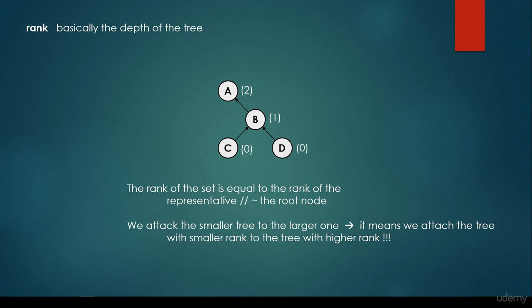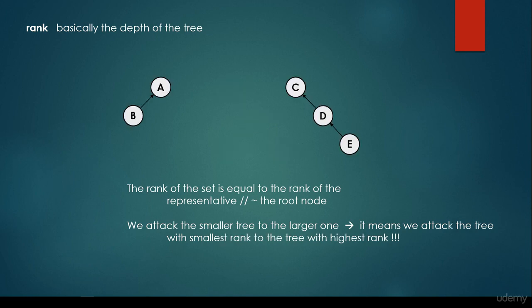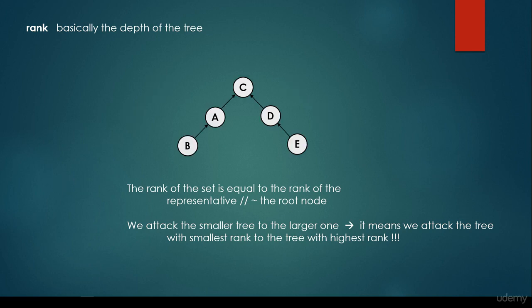Why is this good? Because in this case the tree is not going to be as unbalanced as if we did it the opposite way. For example, we have two disjoint sets — A and B, and C, D, E — and we would like to merge them. We have to attach the tree with smaller rank to the tree with highest rank. We are going to attach the A, B set to be the child of the root node or the representative of the other disjoint set.